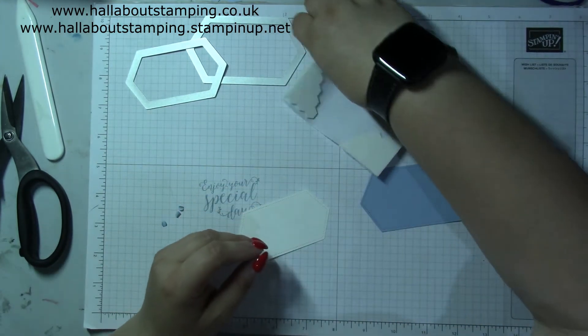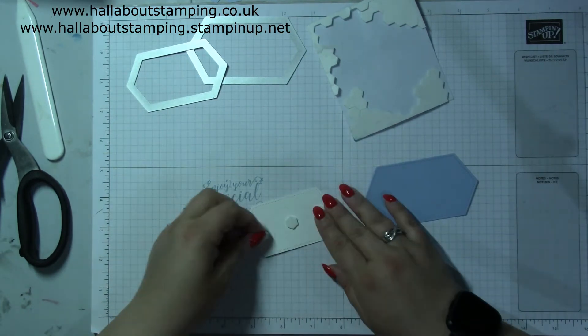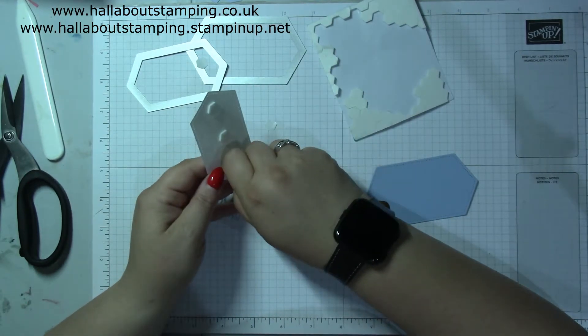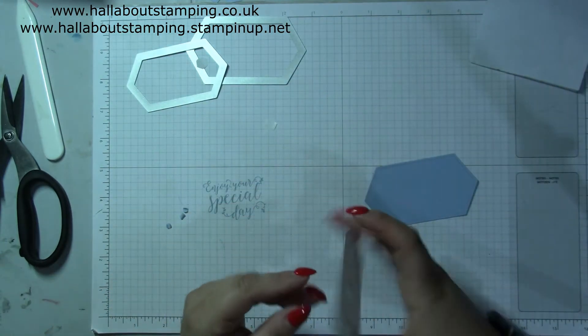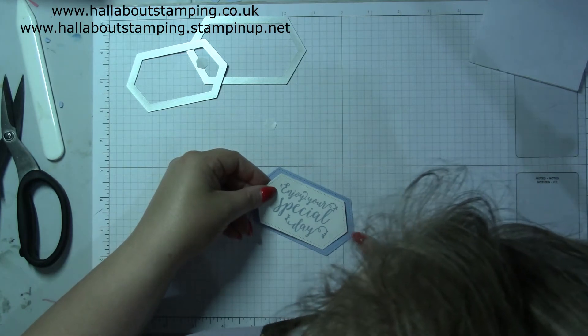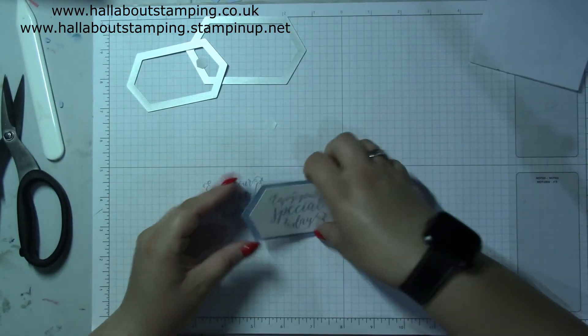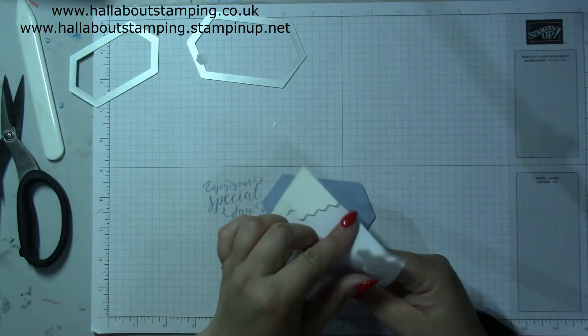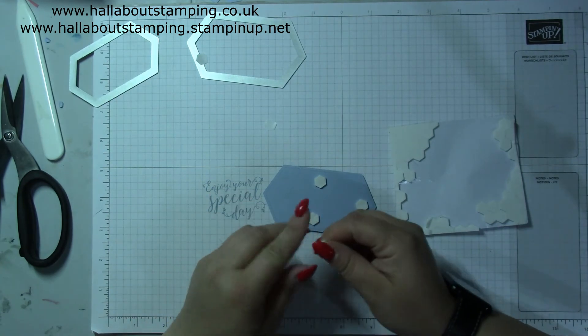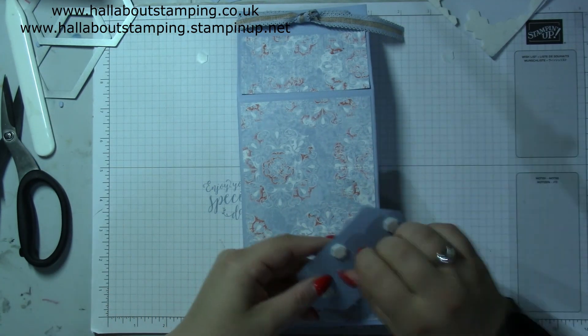Stampin' Dimensionals. I do, I always have to have a ready supply of Stampin' Dimensionals, always. So you're going to stack this up here and you've got a bigger border from point to point than you do up and down so to speak, but it still looks pretty. I think I cut that a bit wonky. Then some Dimensionals on the back and that is going to go on the front of this gorgeous box. Love it, I love Seaside Spray.